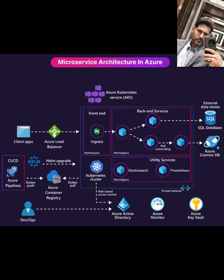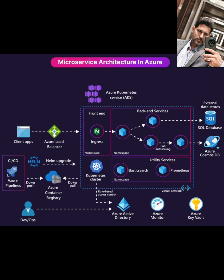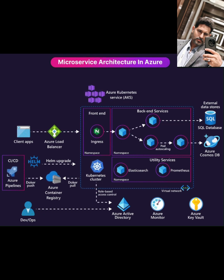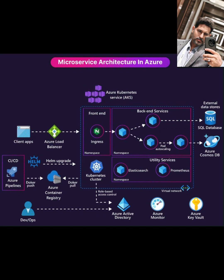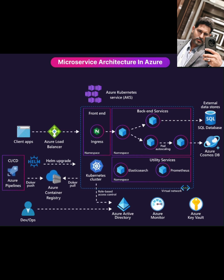How do users access your microservices? Client apps make requests, and traffic first hits an Azure load balancer, which distributes incoming internet traffic across your cluster. Inside the cluster, we typically use Ingress. Think of Ingress as your cluster's API gateway — it exposes specific HTTP or HTTPS routes from outside the cluster and directs that traffic to the correct microservice running inside.